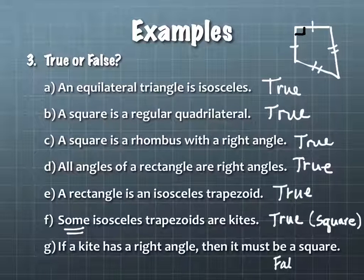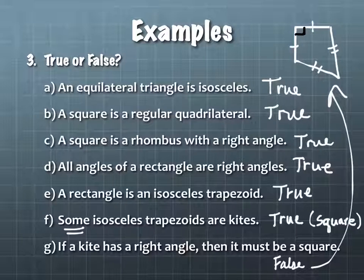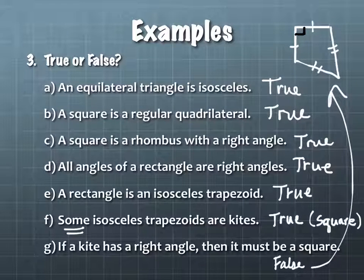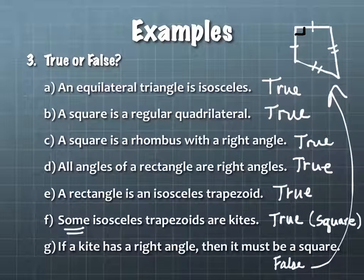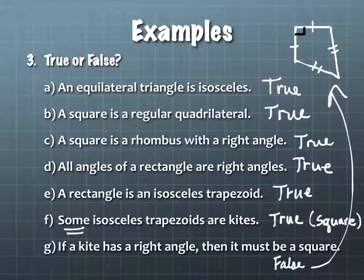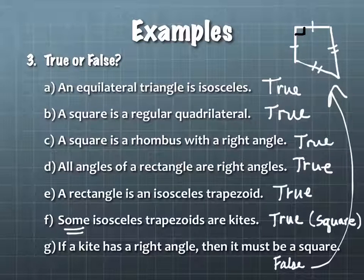A student suggests a rectangle — but that actually isn't a square, because in order to be a kite, the adjacent sides have to be congruent. In what we think of as a rectangle, the top side and a side length on the side are not congruent. But if it's a square, they would be. A true rectangle doesn't work.